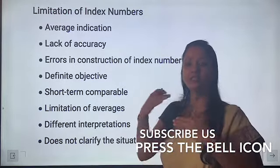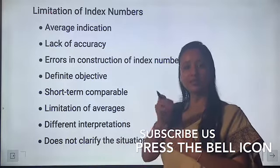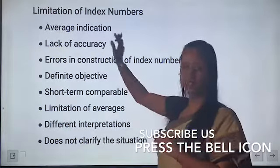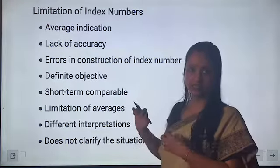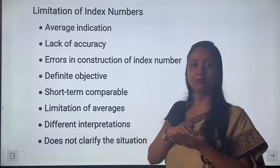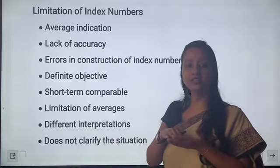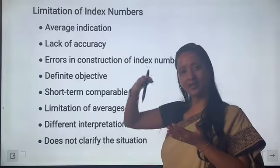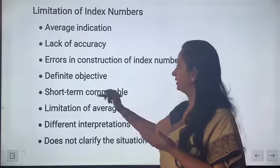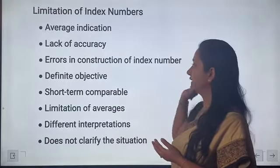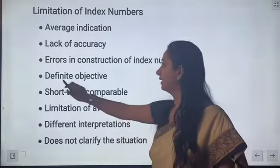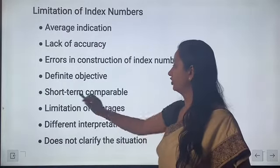Limitations of index numbers: average indication — isme aap percentage wise changes determine karte hain, yeh nahi bata sakta ki kitne rupees ke changes ho rahe hain. Lack of accuracy — jaise sugar ko hum quintal mein aur milk ko liter mein measure karte hain, to yeh ek common unit se applicable nahi ho pata, that is the lack of accuracy. Error in construction of index number — kai baar problem aati hai aur mistakes ho jati hain.